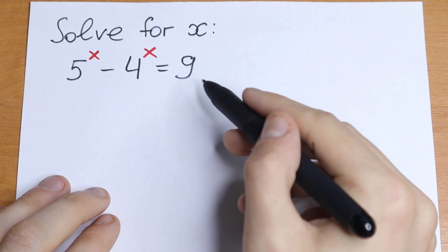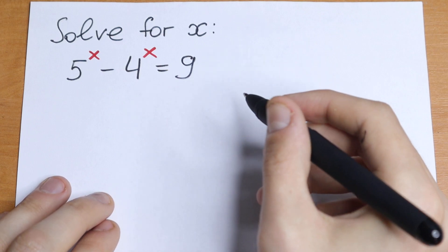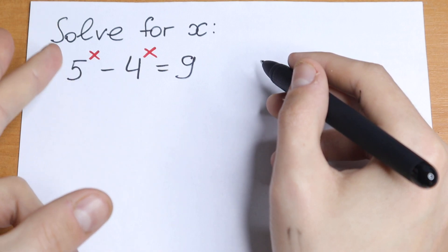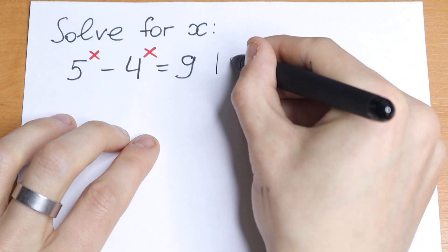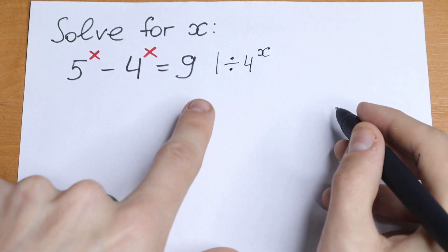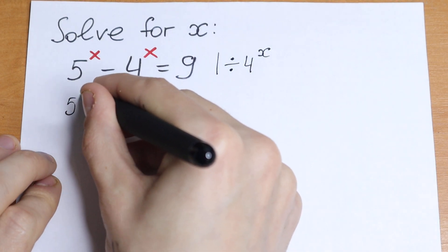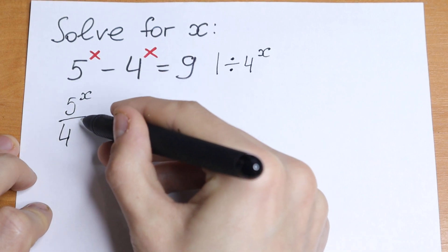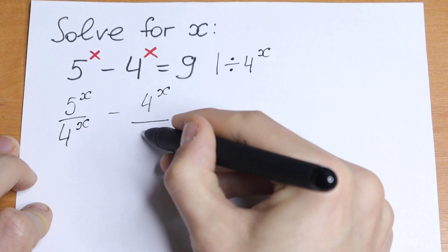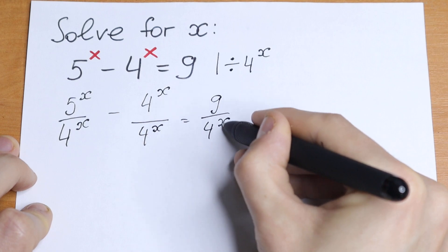I want to show you my approach — how I solve this and how I show that we will have a root right here. Let's divide both sides by 4 to the power x. We can divide by 5 to the power x, but I want to divide by 4 to the power x. We divide both of these elements by 4 to the power x, giving us 5 to the power x divided by 4 to the power x, minus 4 to the power x divided by 4 to the power x, equal to 9 divided by 4 to the power x.